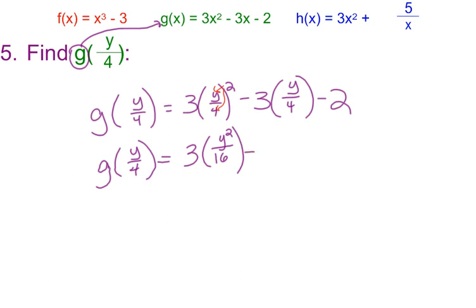Again, now another little reminder is when we multiply fractions. So this is really 3 over 1 times y over 4. So we multiply across the top and across the bottom. So I would actually have 3y over 4. And then minus 2.